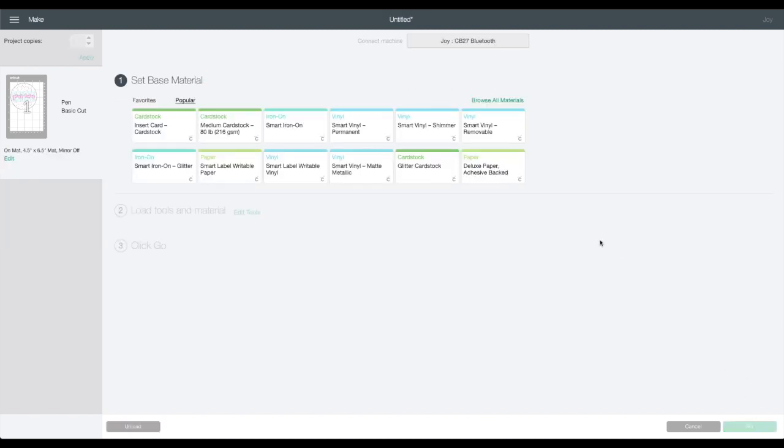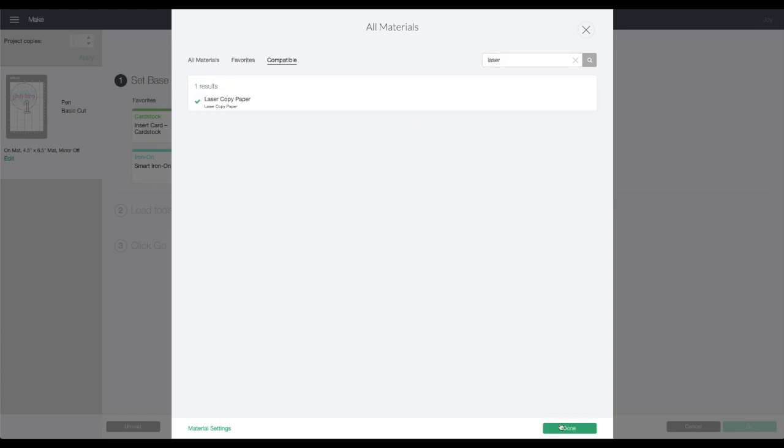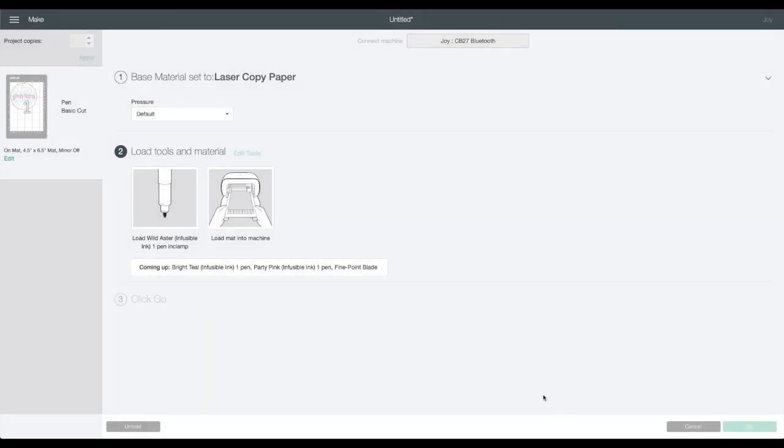And you are going to be able to just start cutting it out and drawing. I click browse all materials and I always choose the laser copy paper. It just works really well for me, and then you're gonna go ahead and get started.